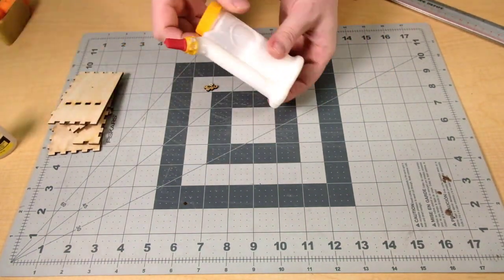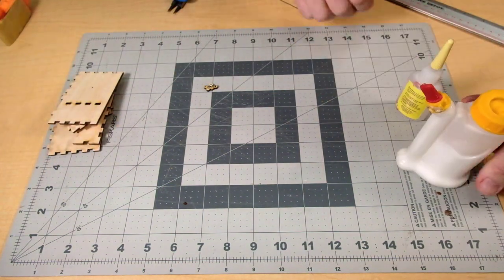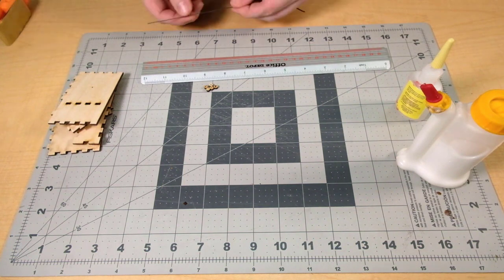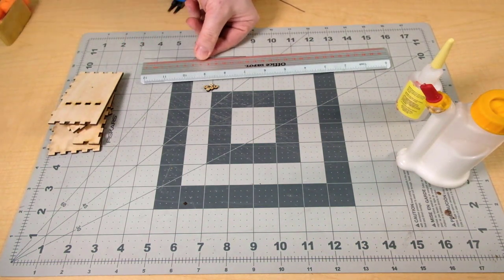You can glue them with white glue or CA glue, but I like to assemble it all dry first to make sure everything works before I glue. It's easy enough to glue later.